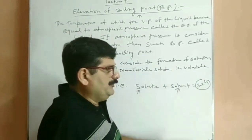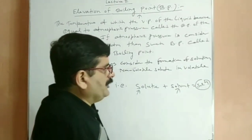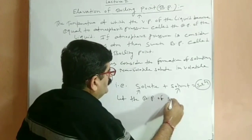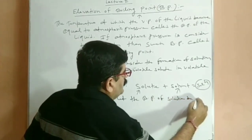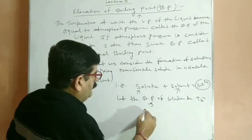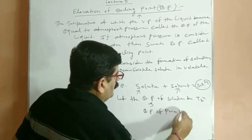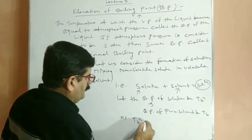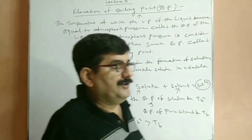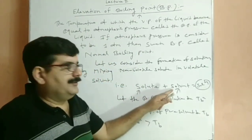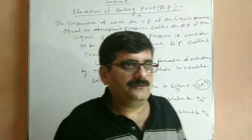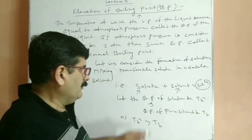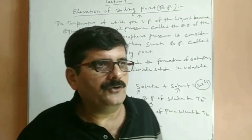Let the boiling point of solution be Tb dash, and the boiling point of pure solvent be Tb. Then we can say Tb dash is always greater than Tb. Because the vapor pressure of solvent is greater than the vapor pressure of solution. Boiling point is inversely proportional to vapor pressure. That is why the boiling point of solution is always greater than the boiling point of pure solvent.